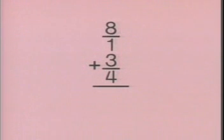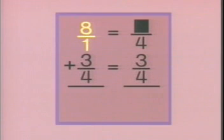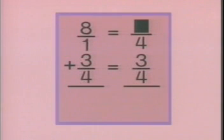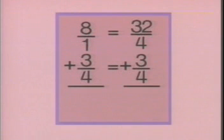Let's work this problem. First we write eight as a fraction. Both fractions must have the same denominator. What denominator? Yes, four. We copy the fraction three-fourths here. Now we write the whole number as a fraction that equals eight and has a denominator of four. What's the fraction? Yes, thirty-two fourths. We copy the sign and add.